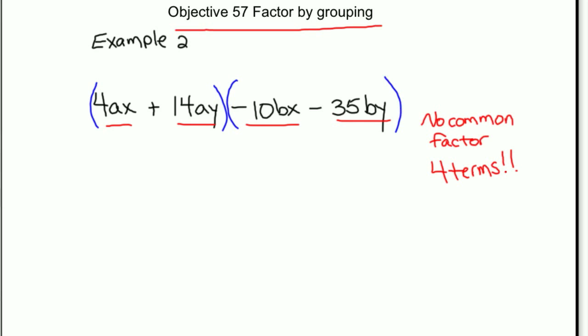As I look at my first group, I notice that I have a common factor of 2a. If I factor out a 2a from that first group, I'll be left with a 2x and then a 7y. So I have 2a times 2x plus 7y.